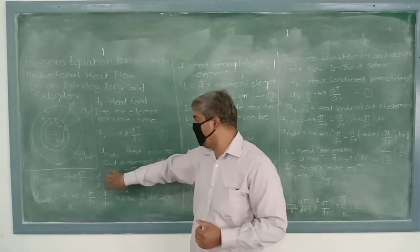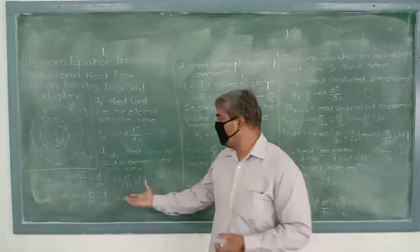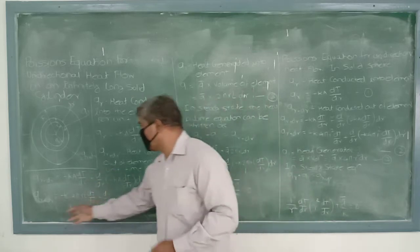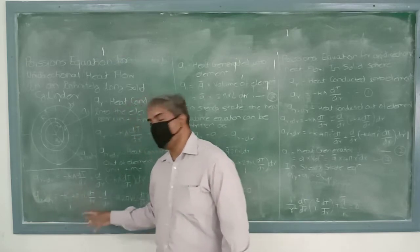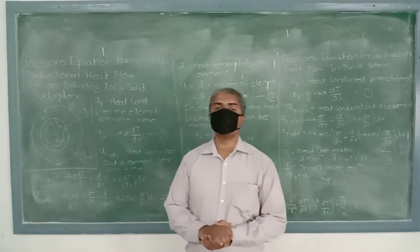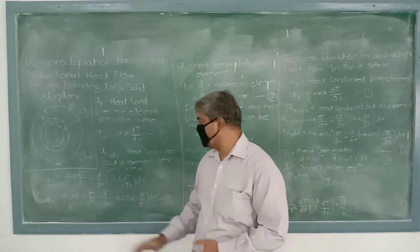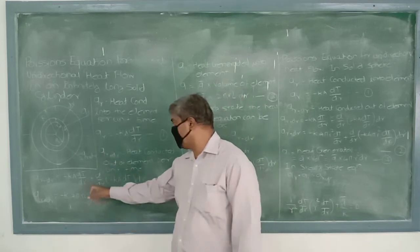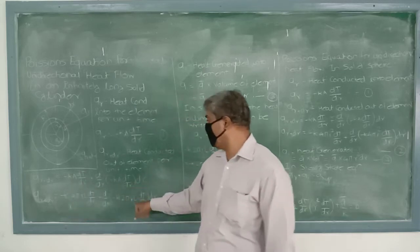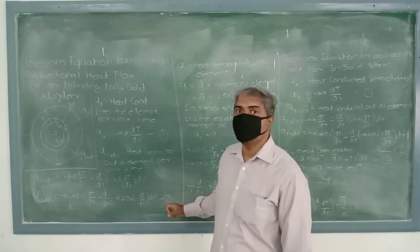After derivation, we substitute the area for this cylindrical portion, which is 2πrl. We substitute the area 2πrl in the expression for qr and also in the expression for qr plus dr. We are calling this equation number 7.